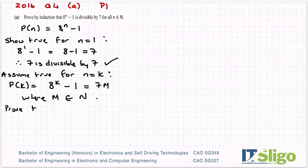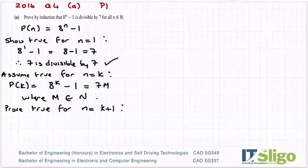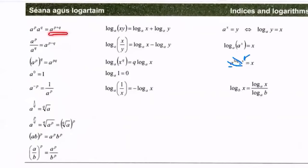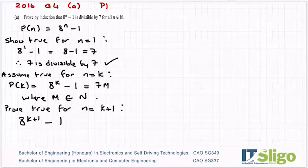I'm going to prove true then for n is equal to k plus 1. So I would like then to prove that 8 to the power of k plus 1 minus 1 holds true. So using the rules of indices here quite a bit, this one in this case, so I have 8 to the power of k plus 1. So I'm going to break it down using this rule here. So I can write this one as 8 to the power of k by 8 to the power of 1 minus 1.